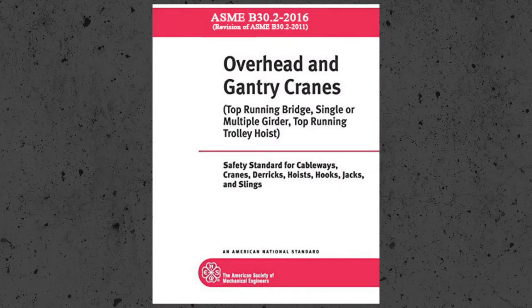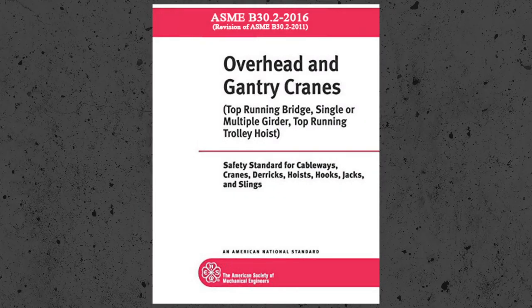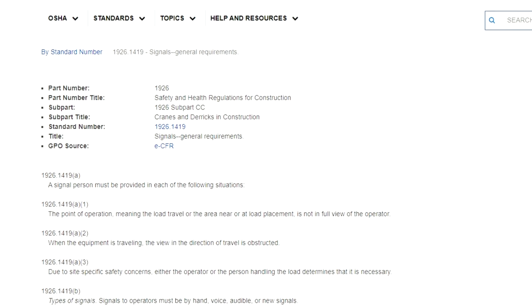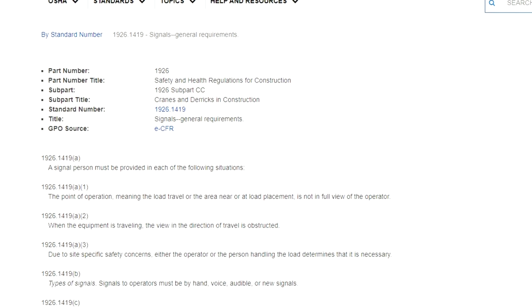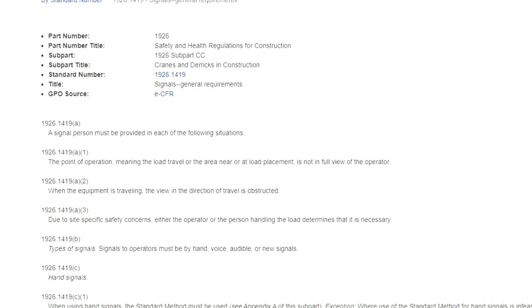For this, we're going to be looking at the ASME and OSHA standards. The hand signals for overhead cranes and gantry cranes can be found in ASME B30.2. The responsibilities we're going to use are found in the OSHA Code of Federal Regulations 1926.1419.